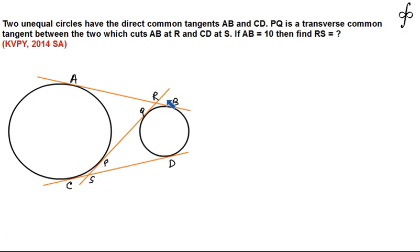The length of the direct common tangent AB is given to be 10 and we need to find out the length RS.